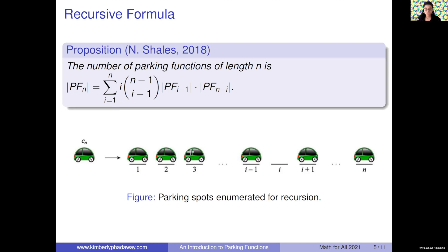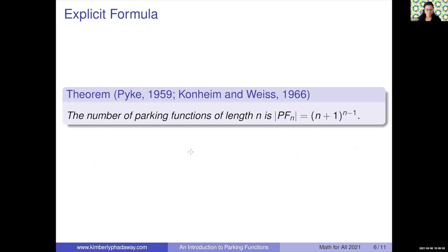Like most recursions, this one requires knowledge of the previous cases to use, which is not always very practical. Thankfully, some great minds discovered an explicit way to count parking functions: n plus 1 raised to the n minus 1, where n is the number of cars and parking spots. To show this, we follow a proof outlined by Pollack in 1974 — very succinct, six sentences — and a lot happens in those six sentences, so we'll walk through it together.